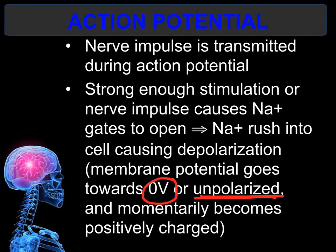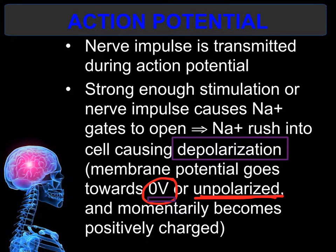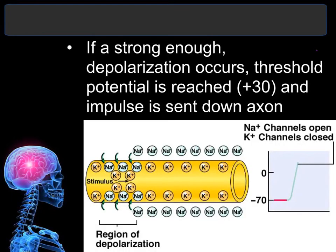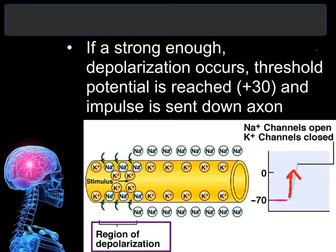The word for becoming unpolarized is depolarization. At rest, the neuron is polarized — it has a charge of negative 70. Because sodium is rushing in, the charge moves toward zero, meaning there is no longer a charge. That is why it is called depolarization — the neuron is going from polarized toward zero, where there is no charge.